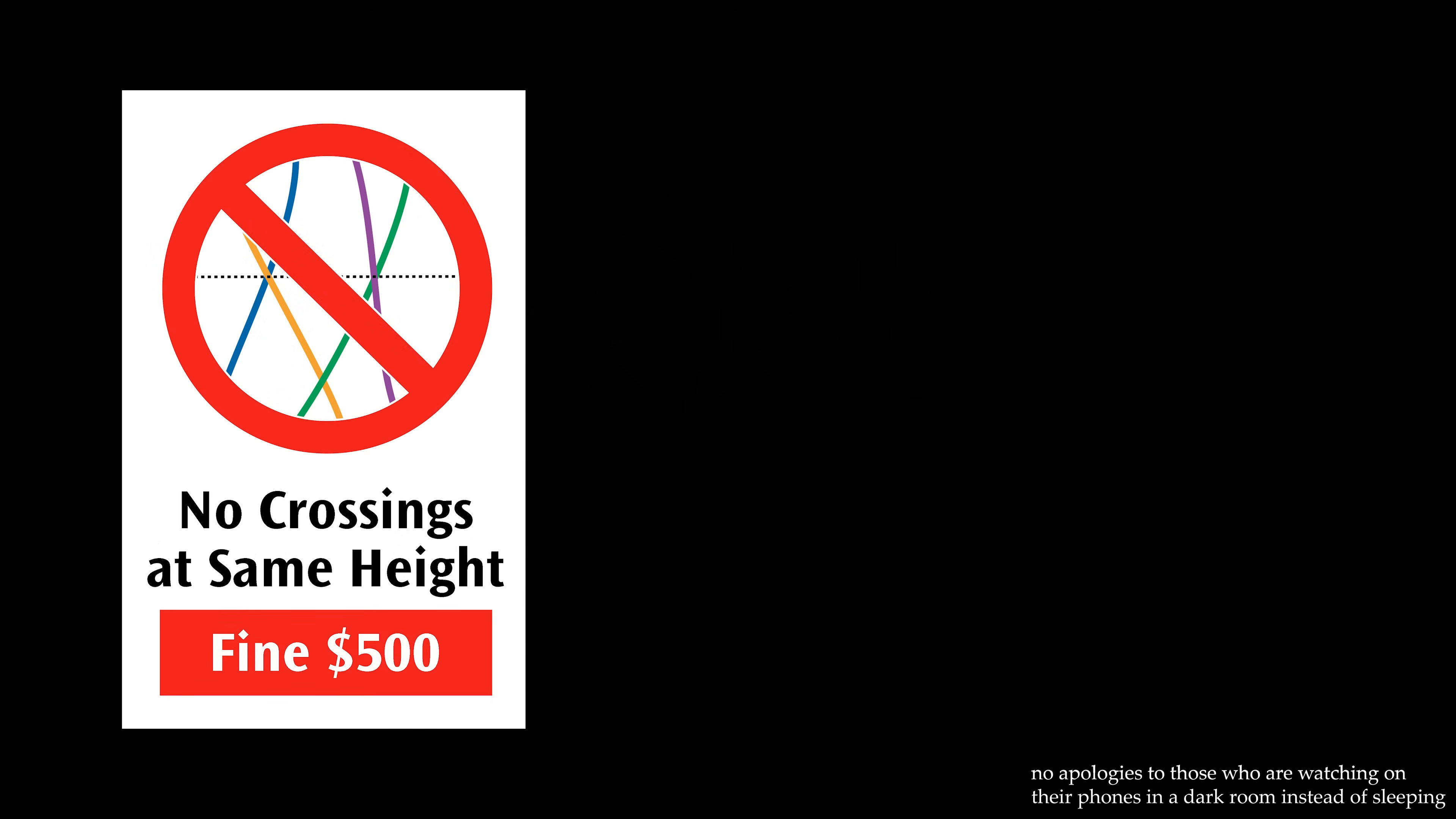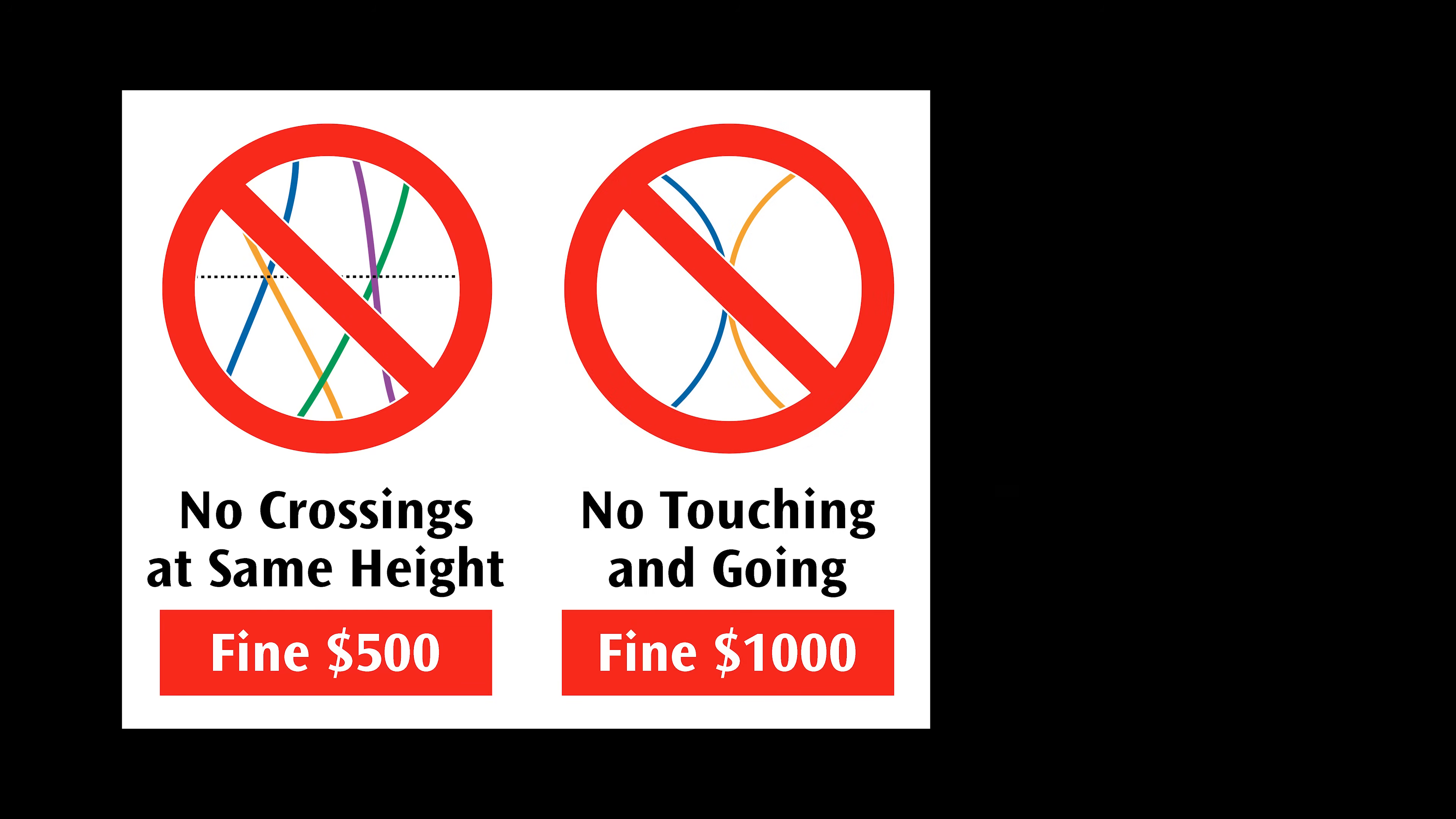When drawing a braid diagram, there are 3 rules. First, you can't have 2 crossings at the same height, since this confuses the horizontal line. You also can't have 2 lines touch and not cross, because we're only trying to count crossings rather than touching or intersection.